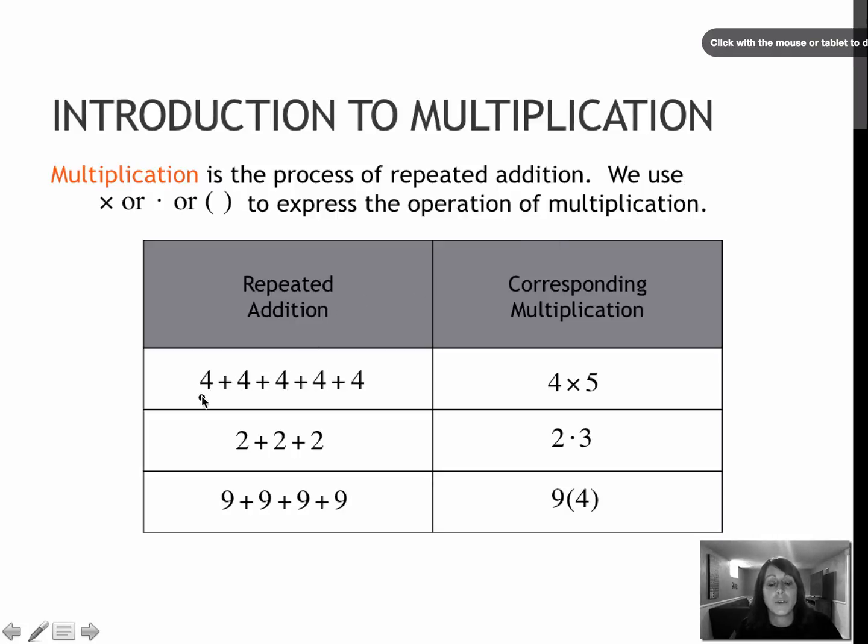For instance, in my first example, I have one, two, three, four, five fours. So instead of adding four five times, I can write that as four times five, because four happens five times.